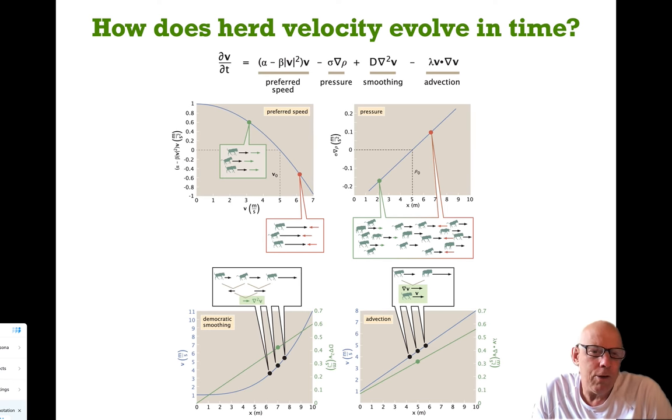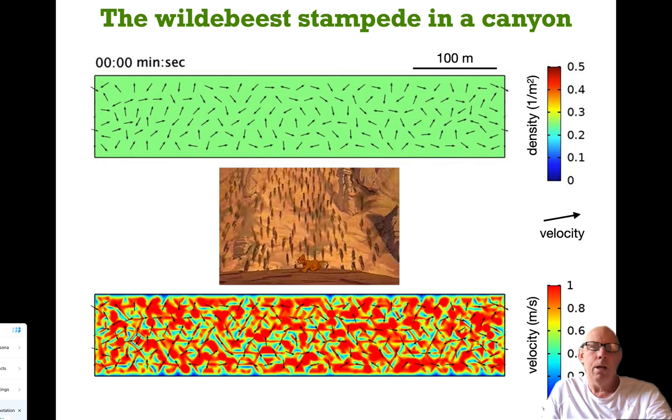We've already talked about the democratic smoothing term. Then there's this term that I'm labeling advection. That term is—the way I think of it, one way to think of it is I'm going to consult my neighbor in front of me, I'm going to evaluate the gradient between us, and then I'm going to punish that gradient proportionally to how fast we're going. In other words, the faster we're going, the more hostile or aggressive the correction will be given that there's a gradient.